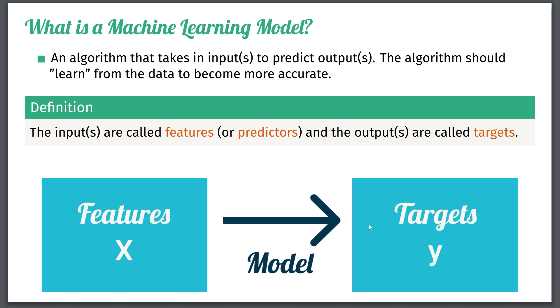So for the handwritten number example, the features here are essentially just the pixel placements where you have color and the targets is essentially spitting out, is it a 2, is it a 5, is it an 8, and so on.